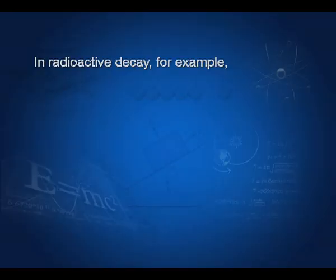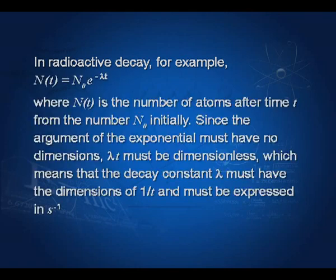In radioactive decay, you write the equation: N after time T equals N₀ e to the power minus lambda times T, where N₀ is the initial number. Now, the argument of the exponential function must have no dimensions. That means lambda times T must be dimensionless, which means the decay constant lambda must have the dimensions of 1 by T — that is, it must be expressed in seconds to the power minus 1.